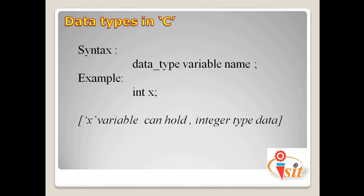Now let's discuss data types in C programming. A data type is a term which refers to the kind of data that variables may hold in a programming language. If you want to store an integer, use the integer data type; for a floating point value, use the float data type; for a character, use the character data type. By using data types, we store different data in the computer system.